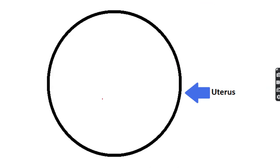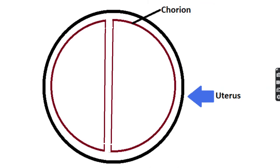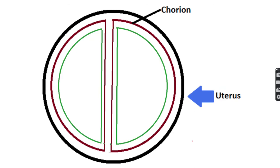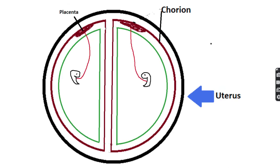In the diagram: the uterus contains two chorions, two amnions, two fetuses, and two placentas.